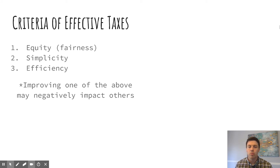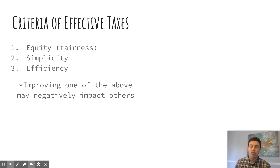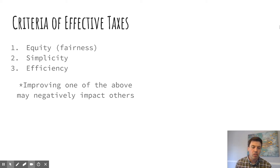In terms of evaluating taxes, we look for three things: equity, meaning fairness; simplicity; and efficiency. We want to try to get all three. The problem is it's subjective — what equity means is going to be a different definition for two different people. Simplicity is fairly straightforward, but sometimes creating a more simple system is not necessarily going to be considered equitable. So it's hard to improve any one of these things without hurting one of the others, making it impossible to get a perfect structure. But overall we're evaluating whether a tax is effective based on how it impacts those three areas.